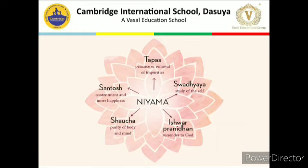Fourth is Swadhyaya. Swadhyaya means to do an introspection of what we have done in the past and what have been the results of our different efforts, and then to rectify our mistakes by acting in the right way in future.